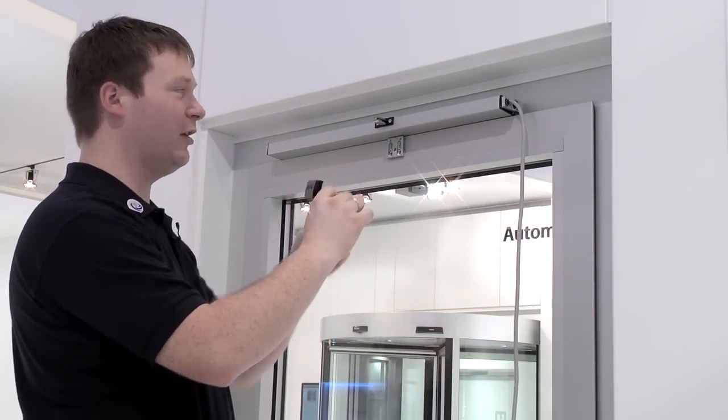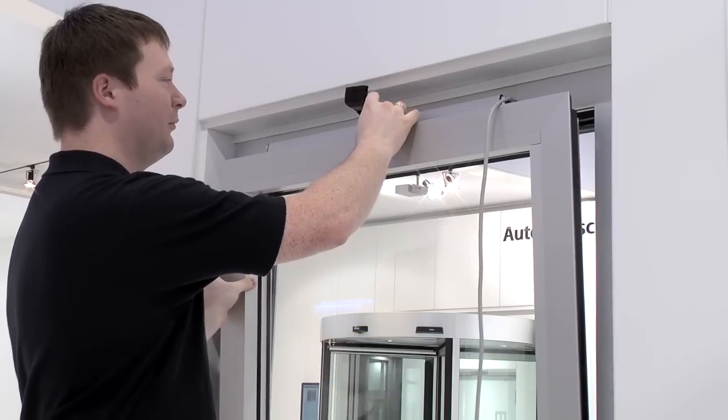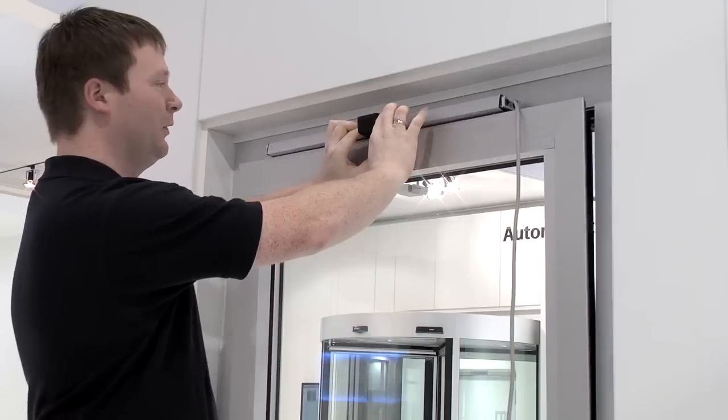Next, you fit the chain rack. On this base plate, the rack's guided. You just slide it on and fix it with one screw.